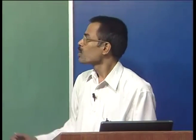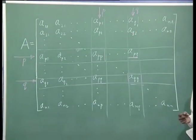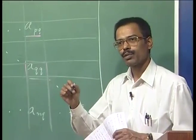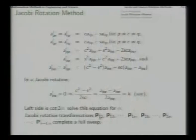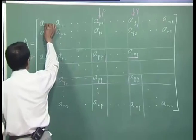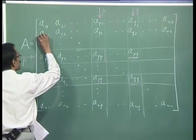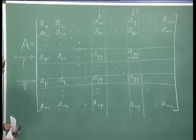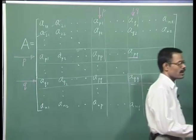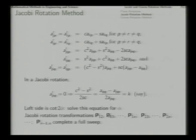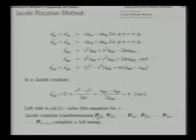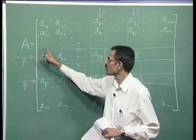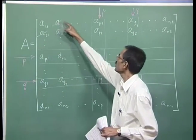We choose p and q one by one in order to annihilate — reduce to zero — the entries we want. We take p-q first as 1-2, making elements A12 and A21 zero. Next we apply P13 to make the 3-1 and 1-3 elements zero. Like that, as we go on applying the rotations P12, P13, P14, P15 up to P1n, we set these elements to zero one by one. By symmetry, the corresponding below-diagonal entries are simultaneously set to zero.